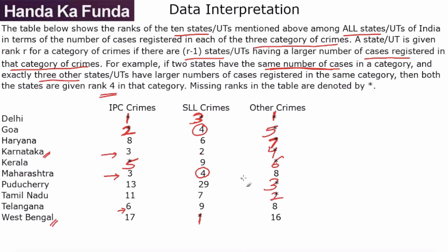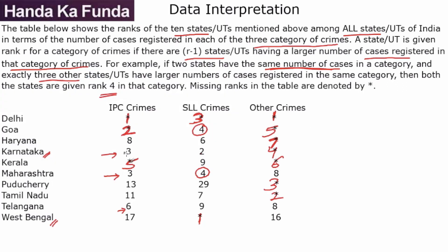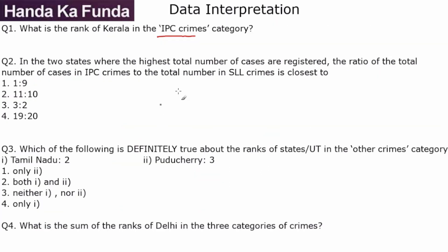Question 1: What is the rank of Kerala in the IPC crimes category? Kerala in IPC crimes is rank 5 — we have already found that out.